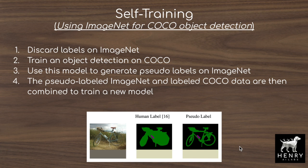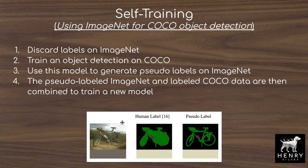COCO is a dataset of images with bounding boxes over objects, and semantic segmentation labels every pixel as a semantic class like bike or background. The first step of self-training is to take the larger dataset — such as ImageNet — and discard its labels, since the goal is to produce bounding boxes rather than image-level labels. We train the object detection model on the labeled COCO dataset, then use that model to generate pseudo-labels on ImageNet, producing predicted bounding boxes for each ImageNet image via a forward pass.